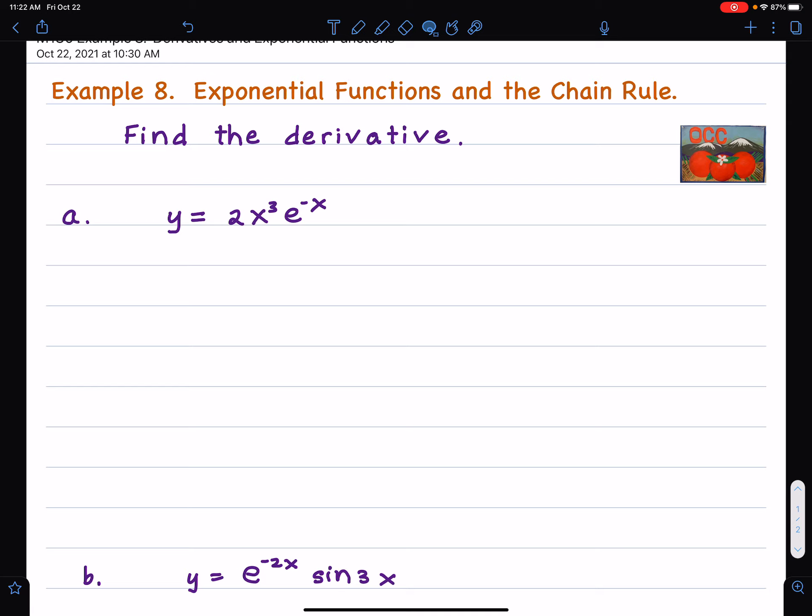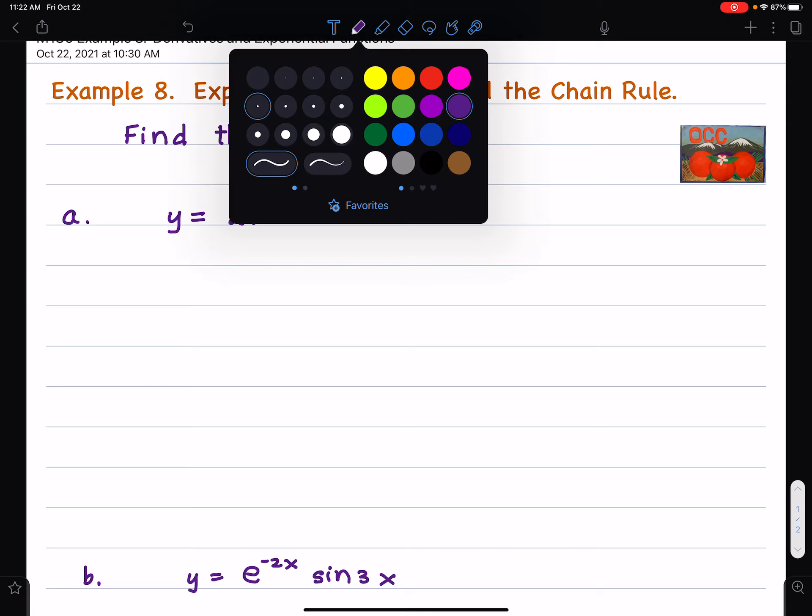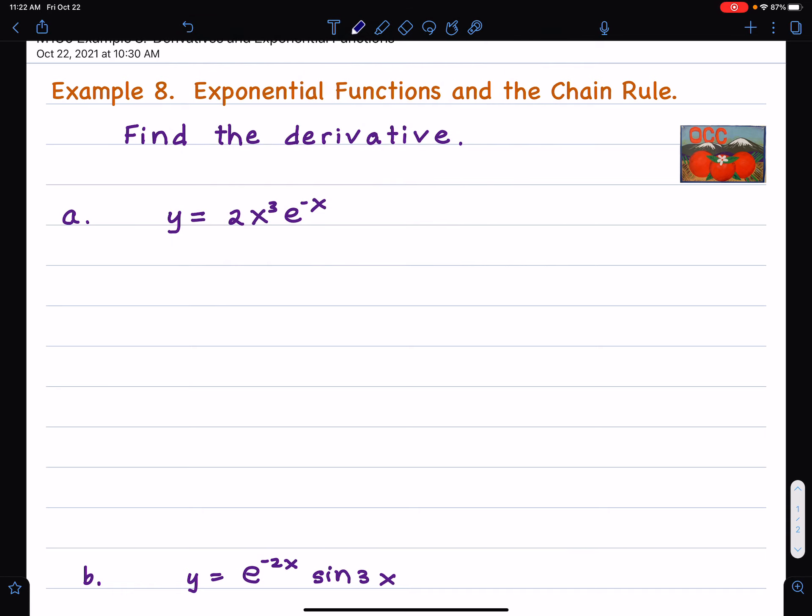So let's go ahead and jump in and find the derivative right here. We have a product of 2x cubed times e to the negative x. Let's take the derivative using the product rule.